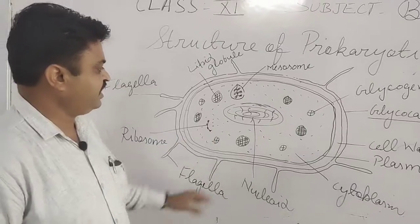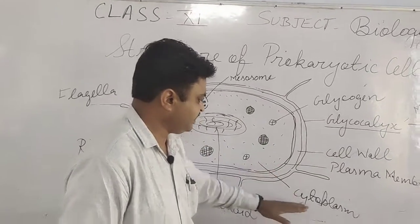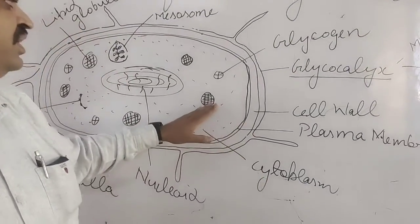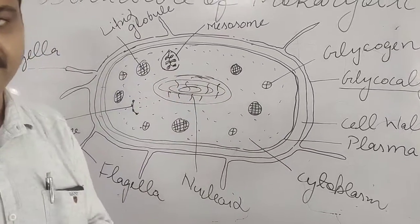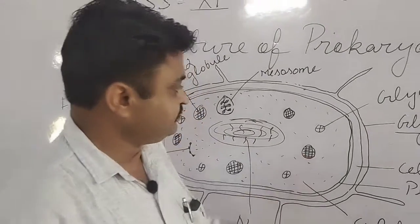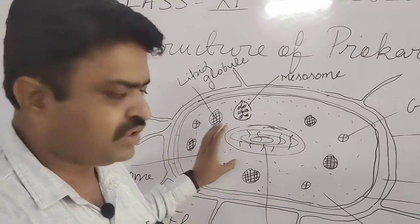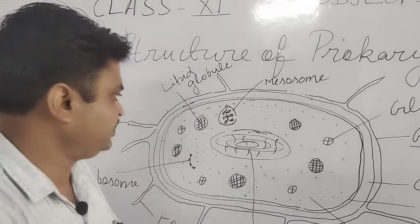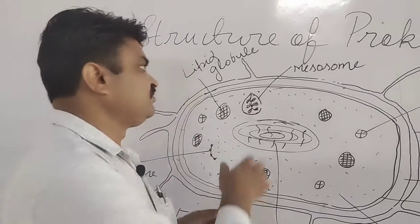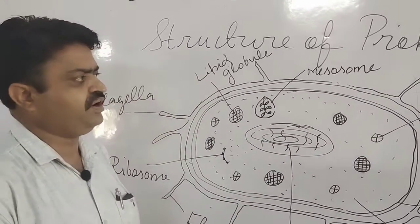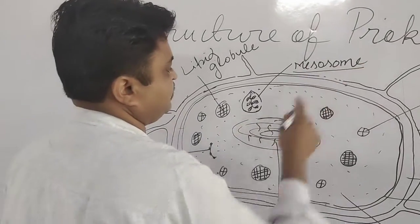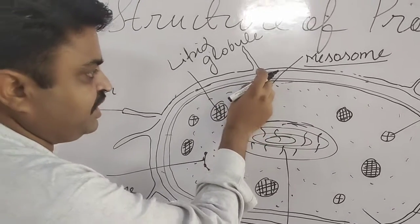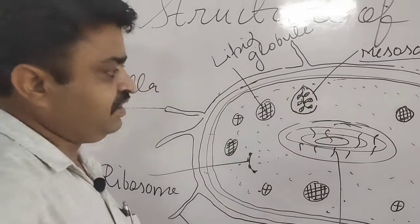The next structure found inside the bacterial cell is cytoplasm. It provides the medium to the organelles found inside the cell. Membrane-bound organelles are absent in the bacterial cell. The structures that are found include mesosomes, which are produced by the breaking of the plasma membrane.